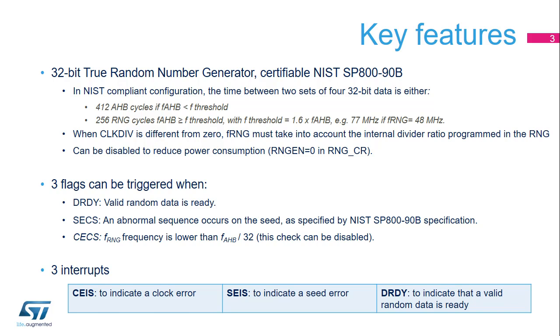When CLKDIV is different from zero, FRNG must take into account the internal divider ratio programmed in the RNG.